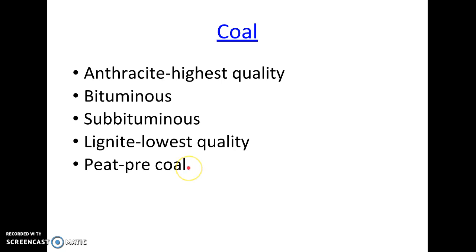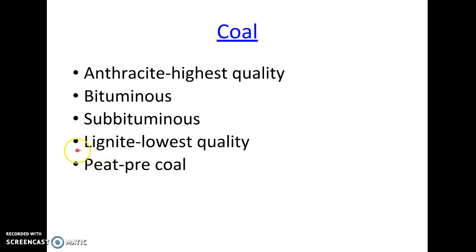An easy way to remember the levels of coal: the best grade you want in class is an A — A for anthracite. If you can't get an A, a B will do for bituminous. The prefix 'sub' means below, so sub-bituminous is below bituminous, and then lignite is the lowest quality coal. You do have to remember the relative order of our types of coal.